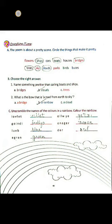B-I-O-L-E-T — so what becomes? Violet. Next one: I-N-D-I-G-O — Indigo. Next: B-L-U-E — Blue. Next: G-R-E-E-N — Green. Next: Y-E-L-L-O-W — Yellow.